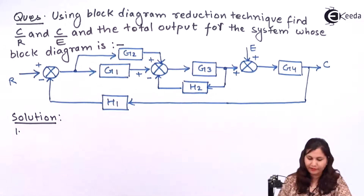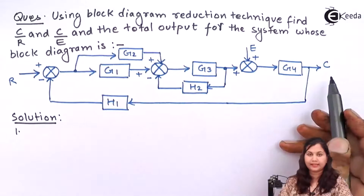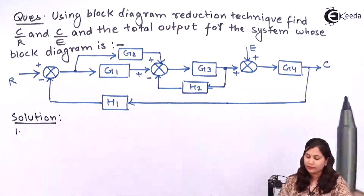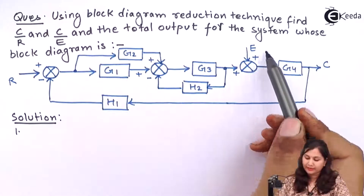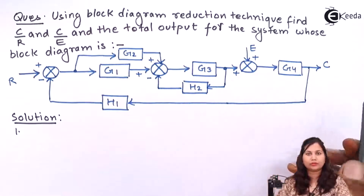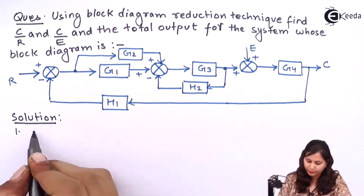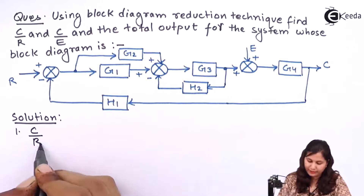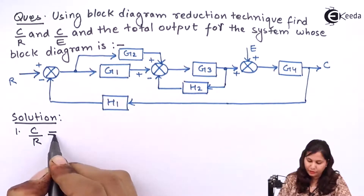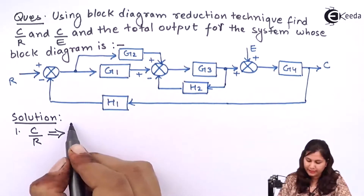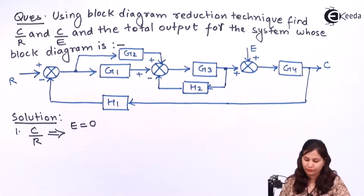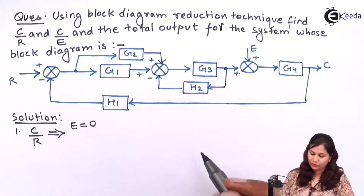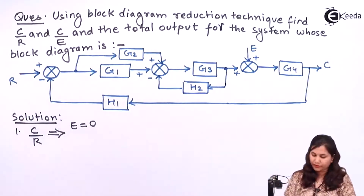First, we will find the ratio C by R. So when we are finding this ratio C by R, we assume that this E input is equal to zero. So for C by R, we will assume that E input is equals to zero. Let's draw the block diagram after assuming E equals to zero.